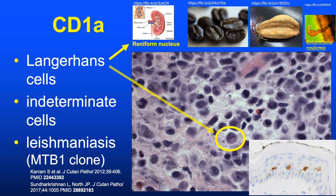There are hundreds of CD markers. CD1A is a marker for Langerhans cells and also labels indeterminate cells; one clone also highlights amastigotes in leishmaniasis. Langerhans cells have a bent or reniform nucleus—shaped like a kidney, sometimes like a coffee bean.